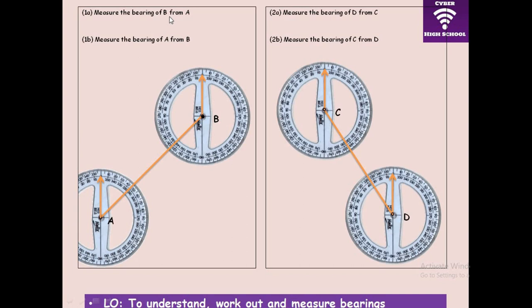Now let's look at another type of question. Measure the bearing of B from A. Remember, the key is 'from A,' so we position our compass at A, identify our north, and measure the angle to B. Look at the angle carefully — it is 045 degrees. Remember, always express it in three figures.